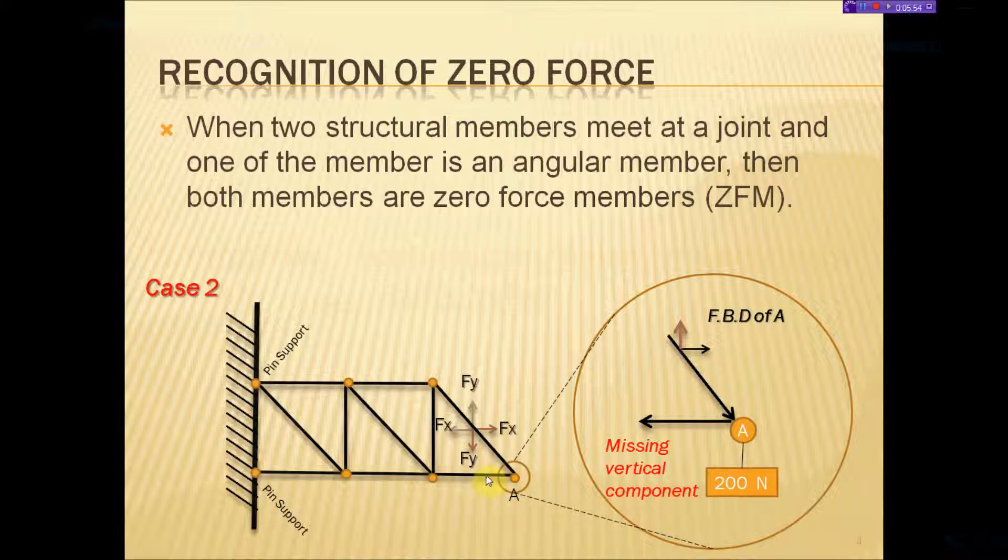A zero force member case is exactly what's shown here. We have two forces coming together. One is an angular force, and for it to be in equilibrium, these have to be zero force members. This scenario is usually called a bird beak, and those are the two scenarios that we should recognize in structural, especially when we're working with trusses, because it allows us to not do the calculation for these members.